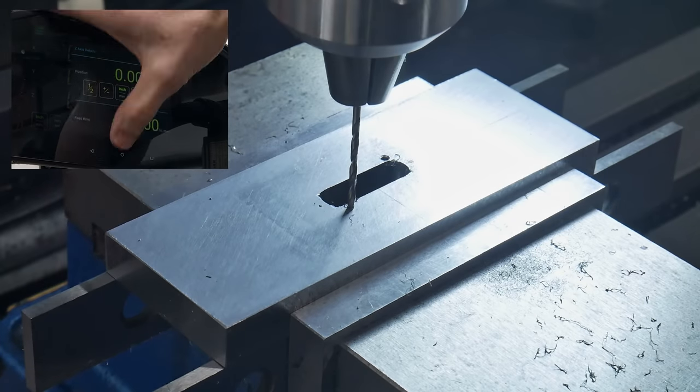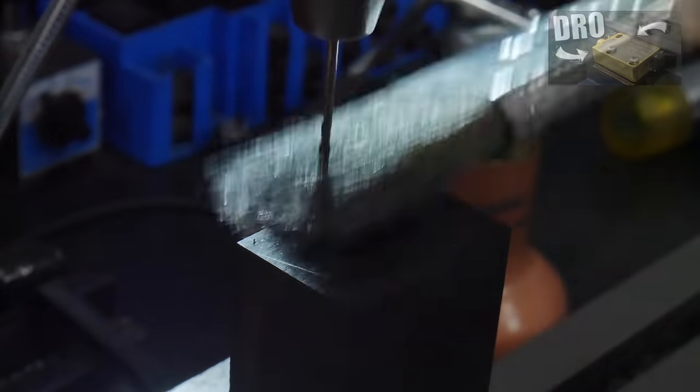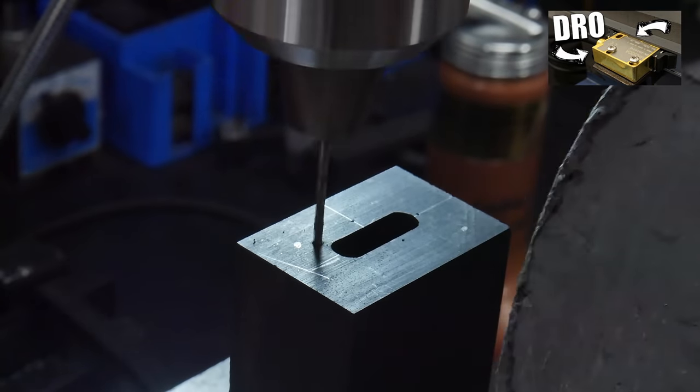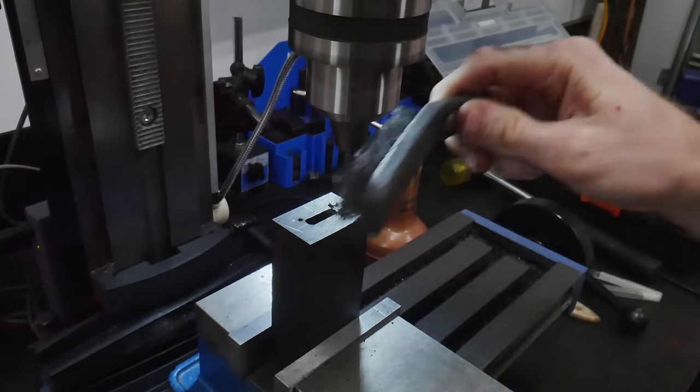Once again, this is a major flex on the part of the digital readout. Once you get one of these bad boys, you'll wonder how you ever used the mill without one. If y'all are interested in what it takes to install a DRO on a mini mill, I'll put my video tutorial in the cards above.